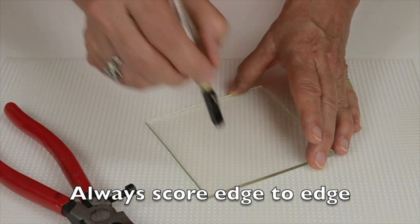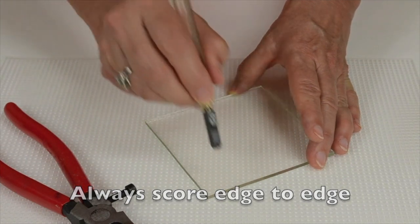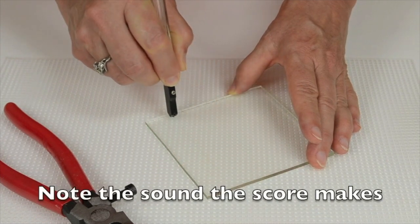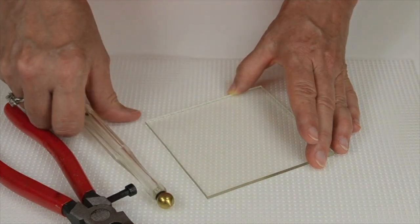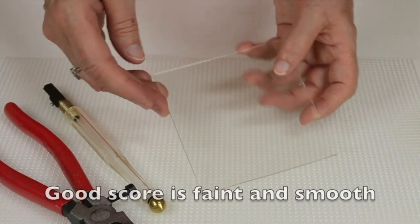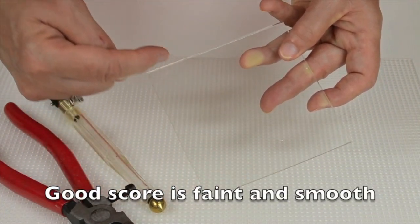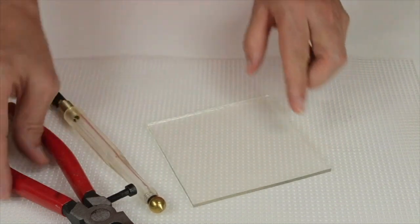Using nice even pressure is the most important thing in getting a good score. You'll see that very faint line, kind of like a strand of hair on the glass. It's a good score.